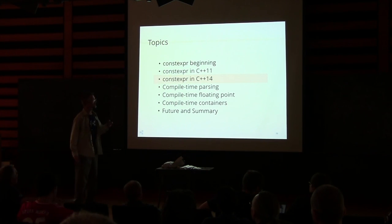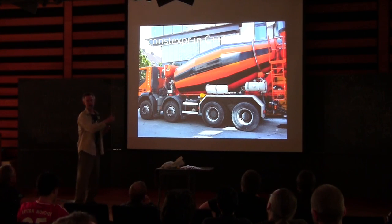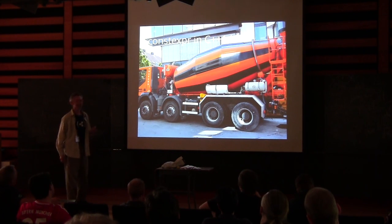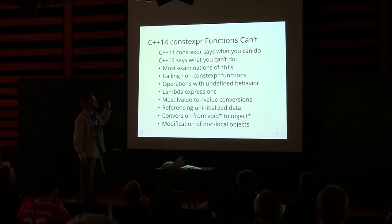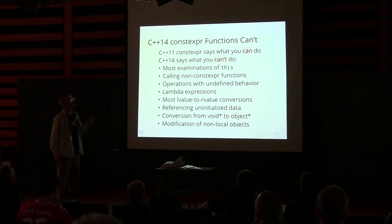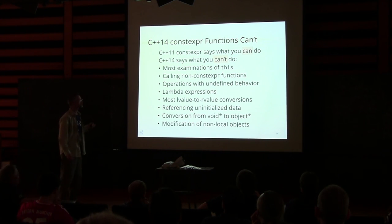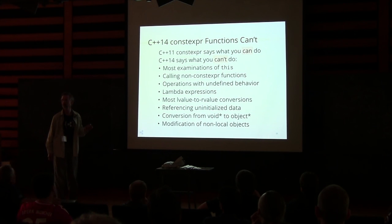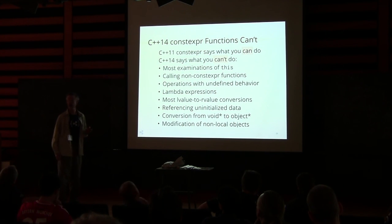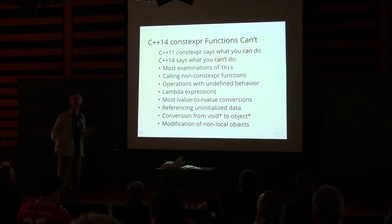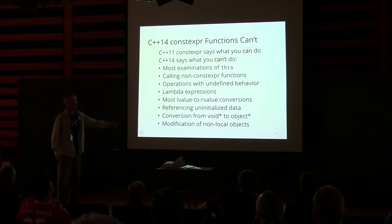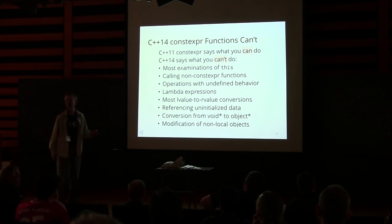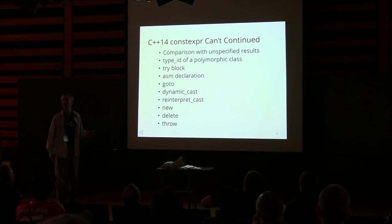Let's get into C++14. In C++11, constexpr says what you can do — what you're allowed to do. In C++14, there is a laundry list of things you're not allowed to do, with the consequence that anything not in that laundry list is okay — open season. It's an entirely different way of constraining it, and there's a lot of wide open territory.